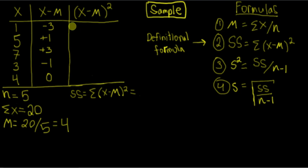So negative three squared is positive nine. One squared is one. Three squared is nine. One squared is one. And zero squared is zero. You can have these little positive symbols here just to remind you.